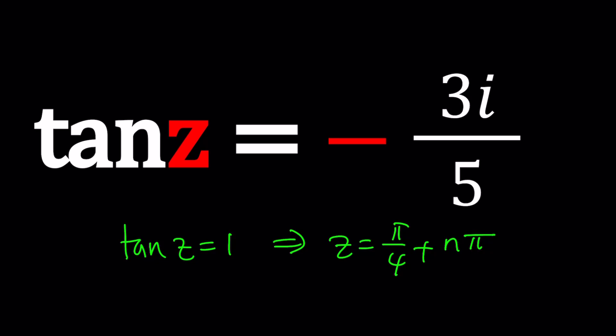But in this case, we have a non-special angle. Well, it's not even non-special. It's imaginary. Come on. Tangent of an angle is imaginary? How is that possible? In the complex world, everything is possible.